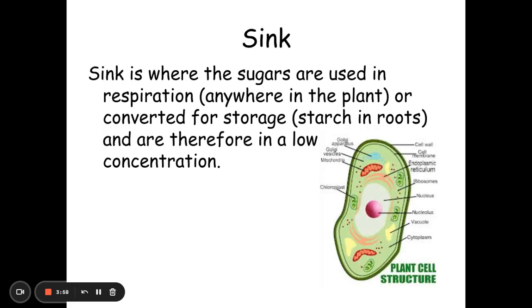The sink is basically anywhere in the plant where these carbohydrates, sugars, or amino acids are being used. So sugars are used in respiration which can occur anywhere in the plant, but also these carbohydrates could be used to put back into storage, for example starch in the roots.